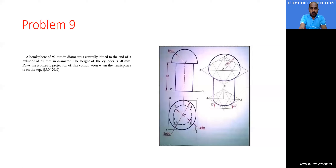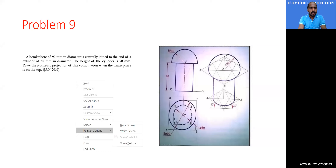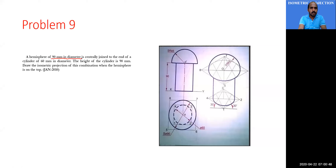Good morning. Problem number nine is a combination solid. A hemisphere of 90 mm in diameter is entirely joined to the end of a cylinder of 60 mm diameter. The height of the cylinder is 90 mm. Draw the isometric projection. It is an isometric projection of the combination of solids.